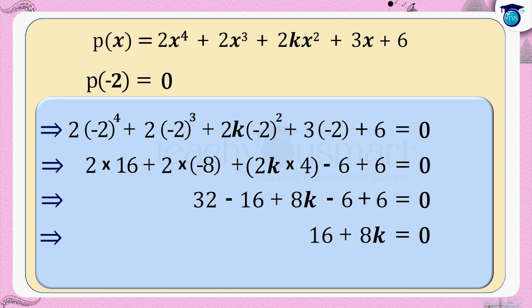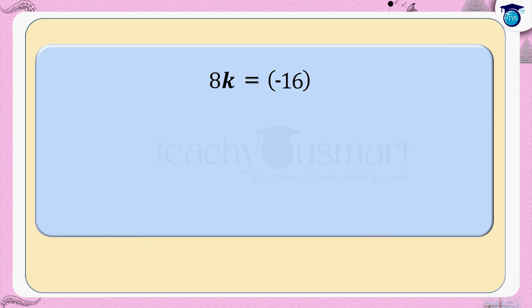This implies 8k = −16, therefore k = −16 ÷ 8, that is k = −2.